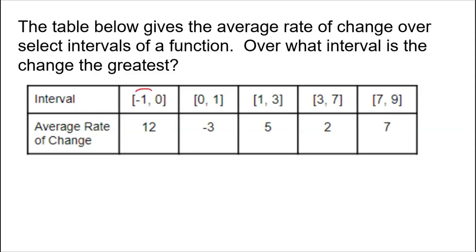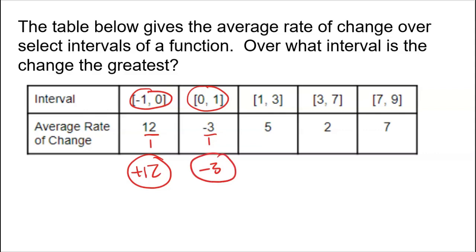In the first interval, it's 1 unit wide with an average of 12 per unit, so the total change is plus 12. The next interval is also 1 unit wide with an average of negative 3 per unit — total change negative 3. The interval 1 to 3 is 2 units wide with an average of 5 per unit — total change plus 10. The interval 3 to 7 is 4 units wide with an average of 2 per unit — total change of 8. So positive 12 is still the winner so far.